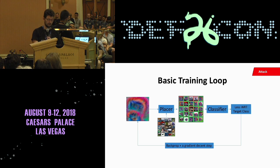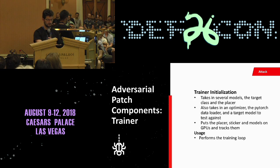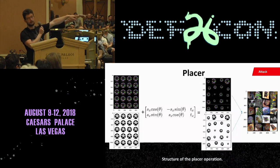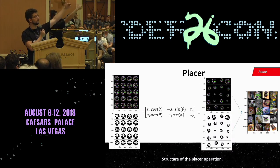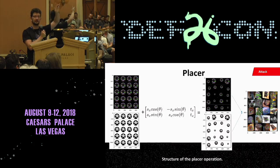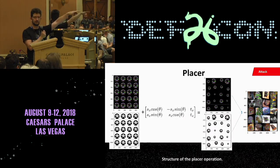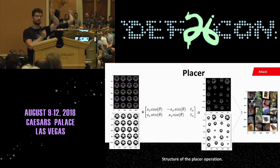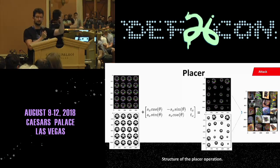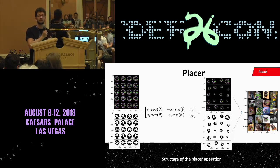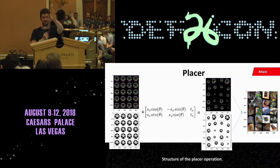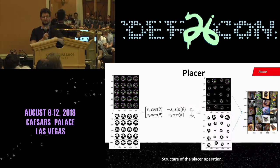When you allow the rotation to be sampled from within plus or minus 90 degrees, the whole system breaks down. The rotation that is actually effective is plus or minus 30 degrees or 15 degrees. So they already pretty much say these stickers have to be sitting straight up.